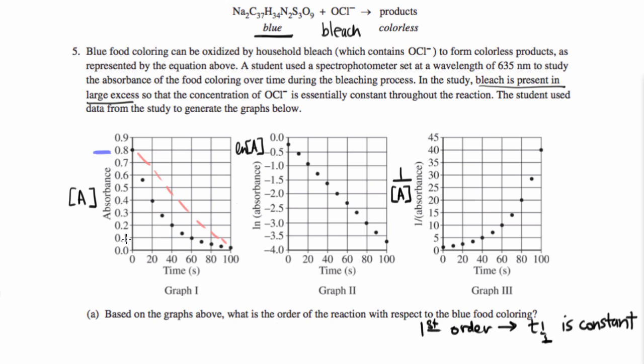So for example, if we start with 0.8 right here, half of 0.8 is 0.4. So we can see how much time it takes to get from 0.8 to 0.4, which is right here. And if we go down, we can see it takes 20 seconds to halve the concentration from 0.8, starting at 0.8 absorbance units.